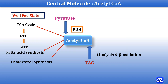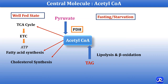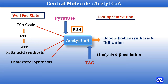What happens in fasting and starvation? The acetyl-CoA which is formed by lipolysis and beta-oxidation from triacylglycerol — there is synthesis of ketone bodies occurring in mitochondria, and these ketone bodies are utilized by various cells in the body in starvation. Mostly the brain is dependent on glucose as well as ketone bodies as a source of fuel in starvation.